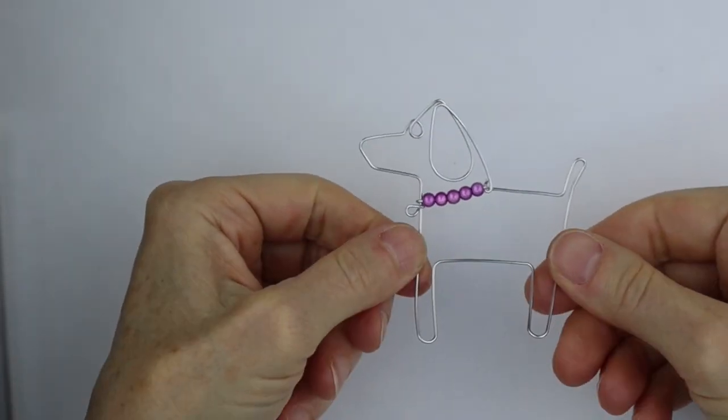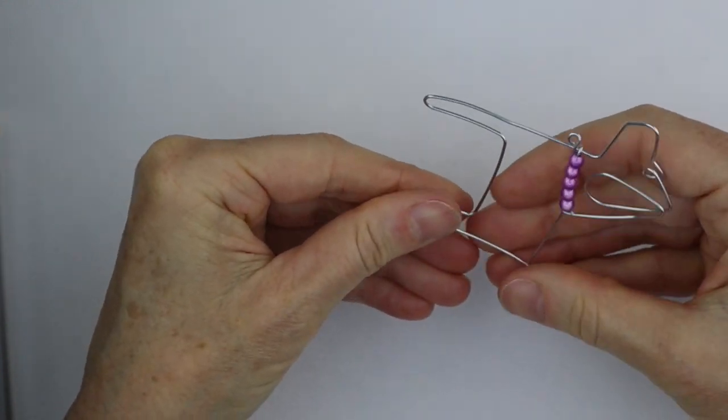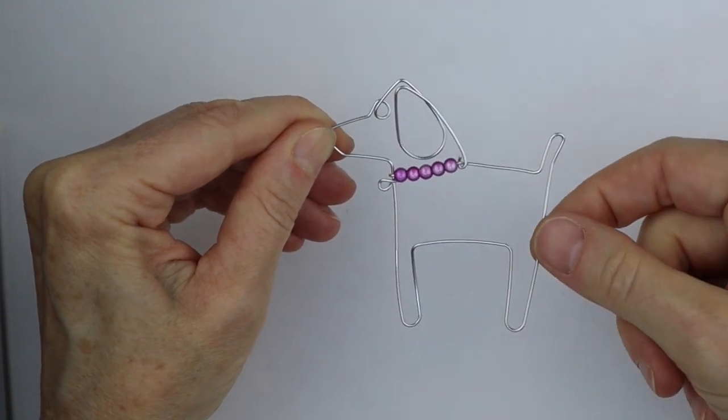So there is the little dog. And if you need to, if he's bent a bit, you need to straighten him out. You can just straighten him out a little bit there. You can hang him probably from the ear.